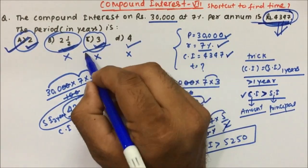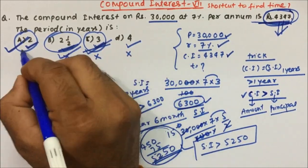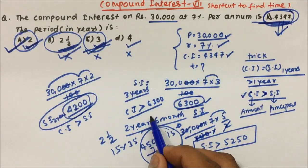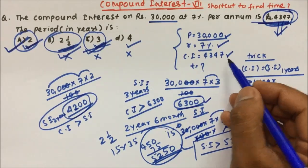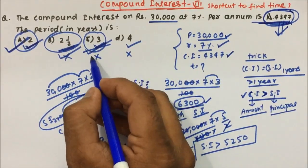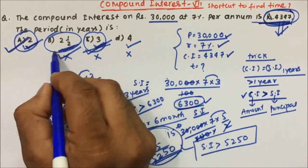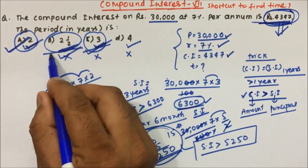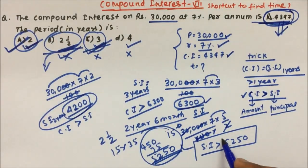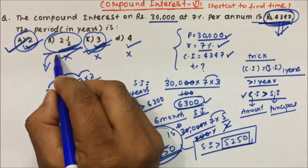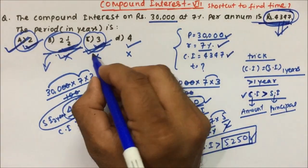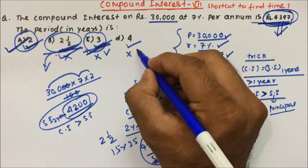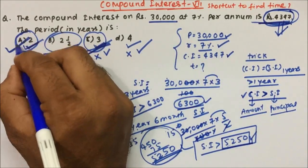In real exam questions, there is no need to calculate for every option. What you can do is calculate for two and a half years first. When you get 5250 for two and a half years, you know that for three years it will be even more, and for four years even more. So automatically, option A — two years — becomes your answer.